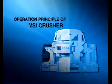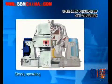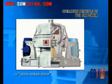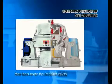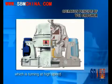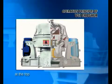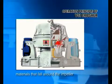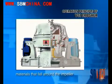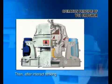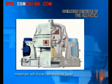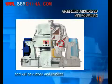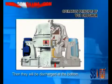Operation Principle of VSI Crusher: Simply speaking, the operation principle of VSI Crusher is stone strike stone. Materials enter the impeller cavity, which is turning at high speed, at the top. With centrifugal force, the materials will impact on other materials that fall around the impeller. Then, after interact striking, materials will impact a material layer between the impeller and scale port many times, and will be rubbed and crushed. Then, they will be discharged at the bottom.